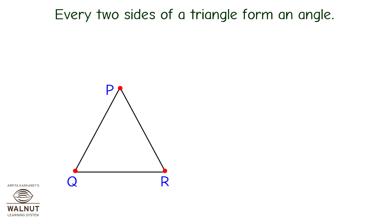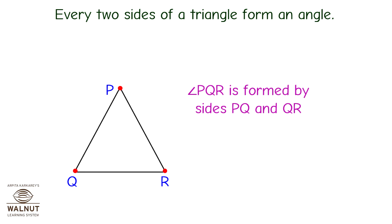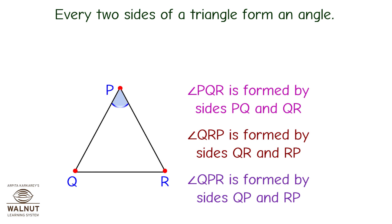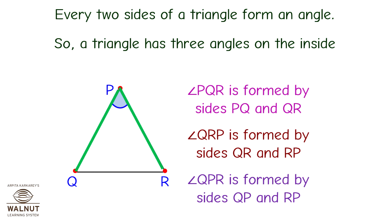Every two sides of a triangle form an angle. Angle PQR is formed by sides PQ and QR. Angle QRP is formed by sides QR and RP. Angle QPR is formed by sides QP and RP. So a triangle has three angles on the inside.